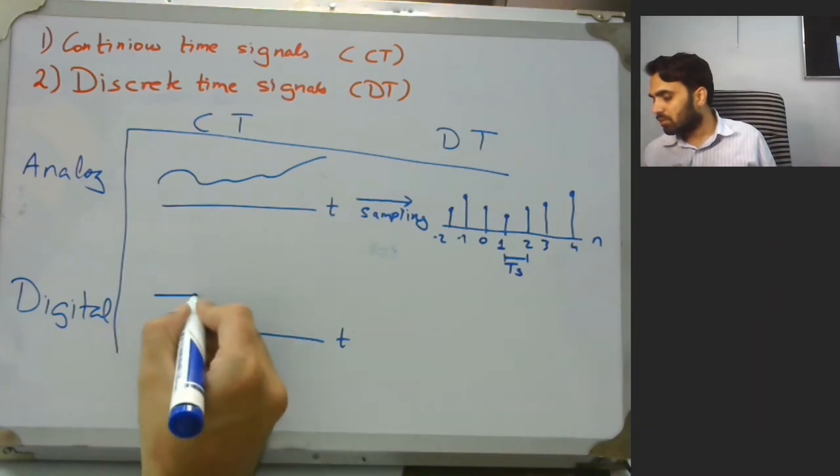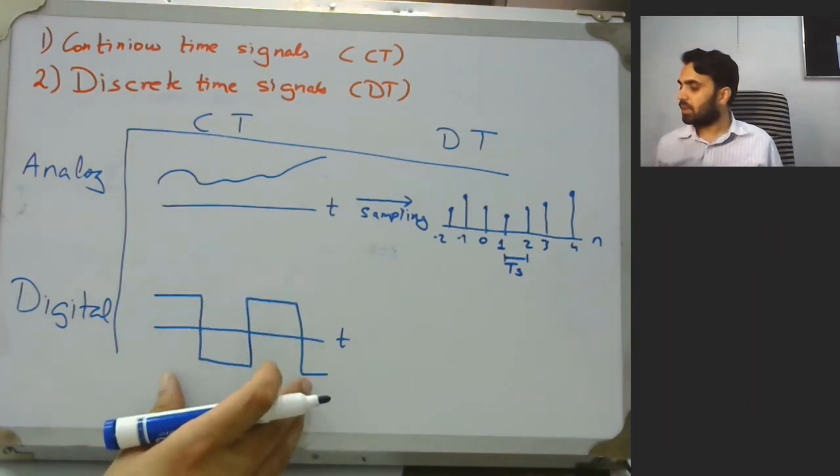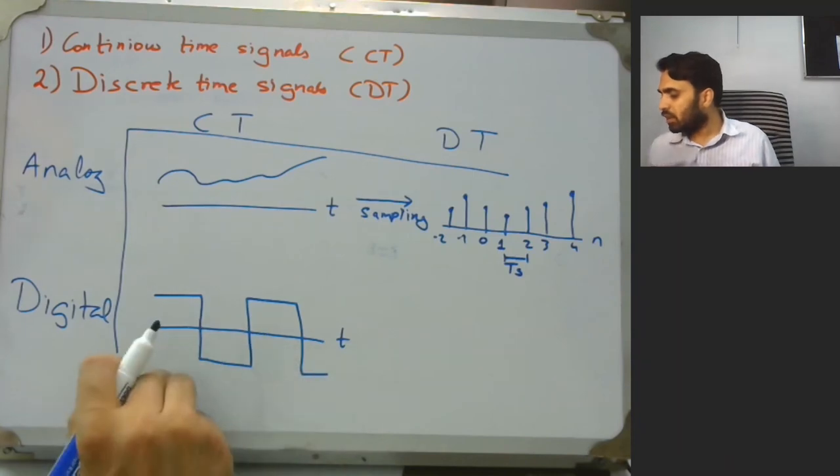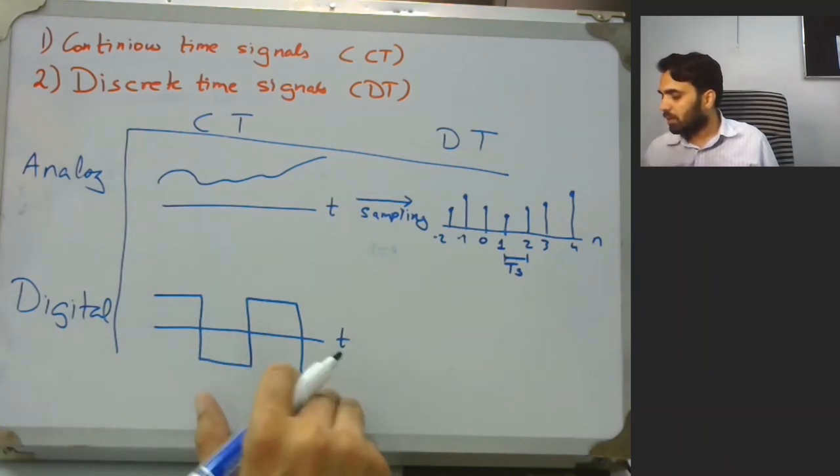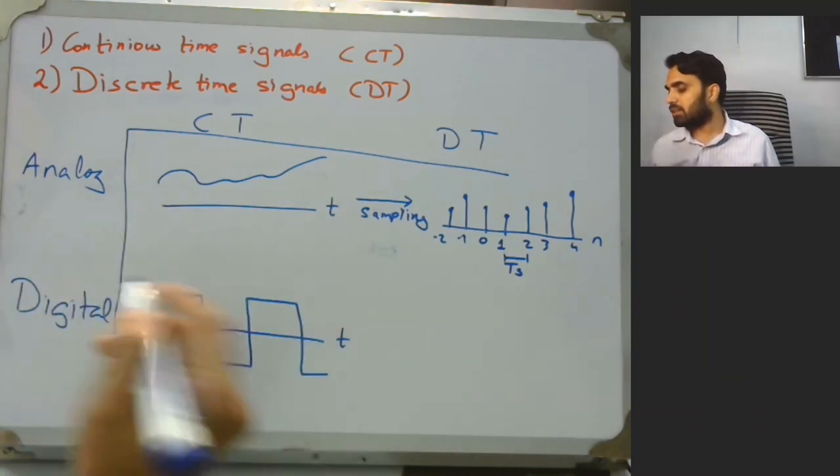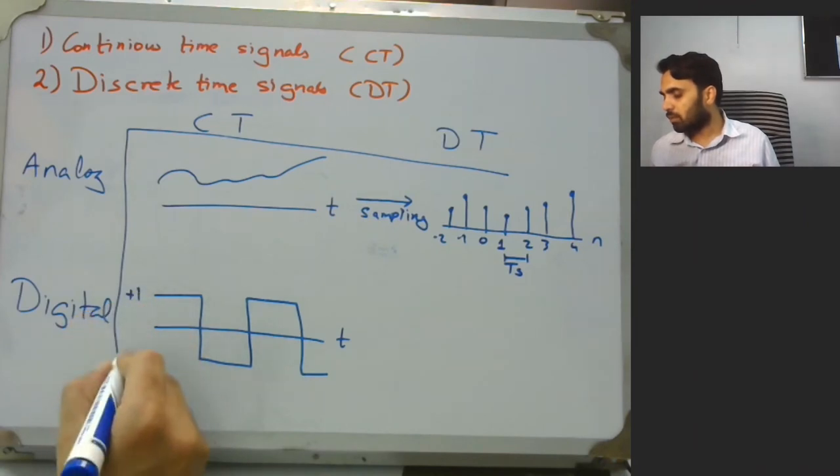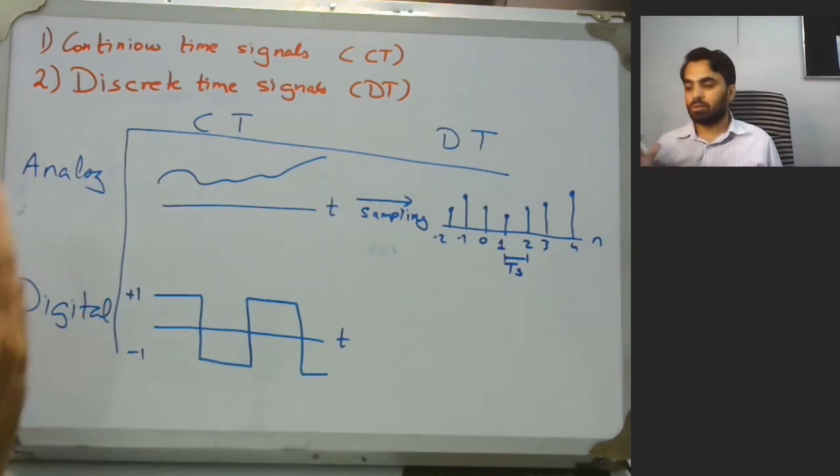On the y-axis we can have this value. This signal is continuous on the time frame, but on the y-axis it is either taking a value of plus 1 or minus 1. So this is continuous time digital signal.